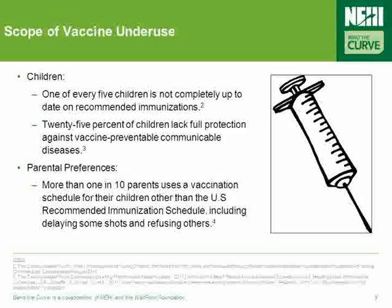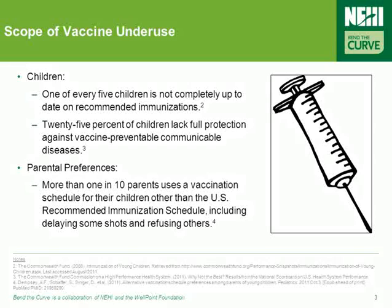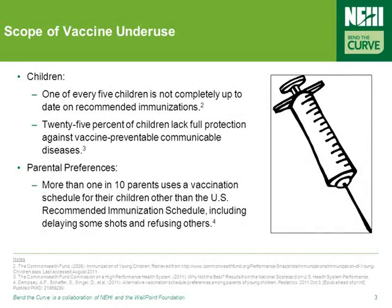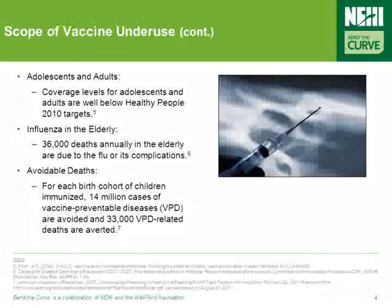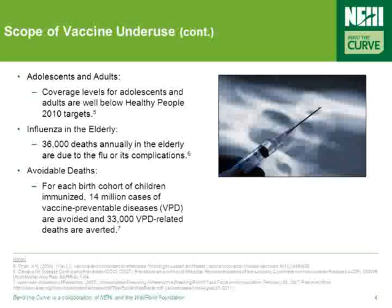Vaccine underuse is a cross-cutting issue that affects all segments of the population. Children are especially vulnerable, as it's been estimated up to 25% of children lack full protection against vaccine-preventable communicable diseases. Despite this, a recent study found that more than 1 in 10 parents uses a vaccination schedule other than the U.S.-recommended immunization schedule, resulting in delaying some shots and refusing others altogether. Furthermore, coverage levels for adolescents and adults are well below the Healthy People 2010 targets, and 36,000 deaths annually occur in the elderly due to flu or its complications.